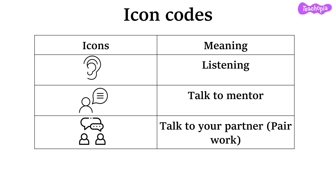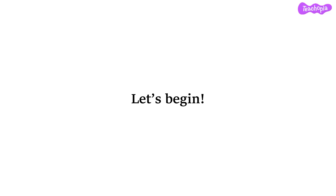A few things to keep in mind before we start: the different icons you will see in this module. If you see a hear icon, it means you have to listen very carefully. If you see a man with a speech bubble, you have to speak to your teacher mentor and give responses for any activities or questions. If you see two people with two speech bubbles, it is a paired activity and you have to speak to your partner. So let's begin our journey.